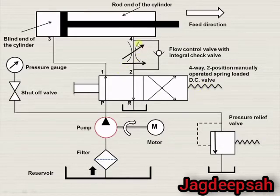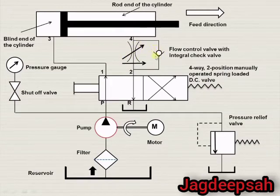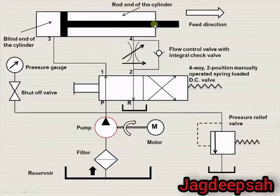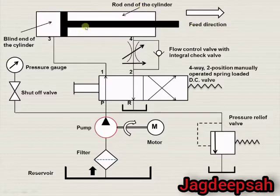This is the flow control valve, which shows a restricted opening, and it is integral with a one-way valve or check valve. This is the hydraulic cylinder. This end of the cylinder is known as the blind end, and this end — where the piston rod is — is known as the rod end. This is the direction of motion of the piston, known as the feed direction.